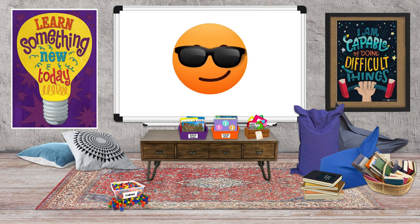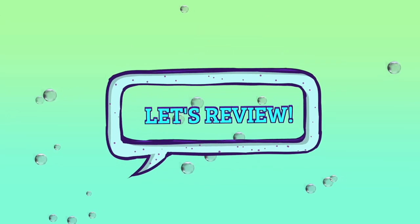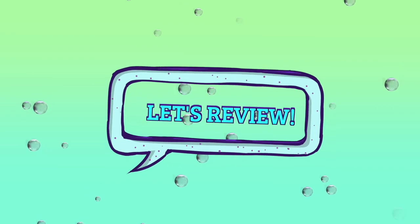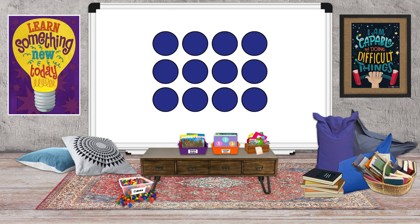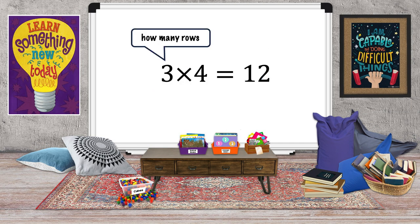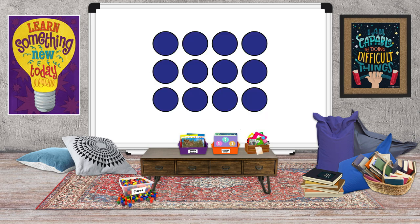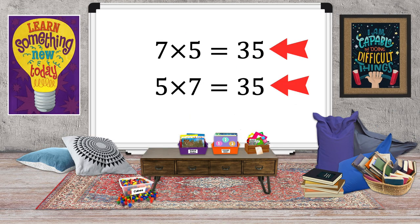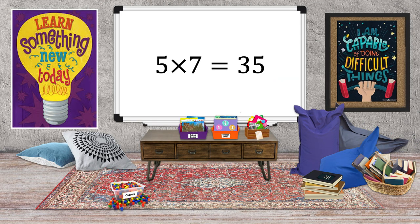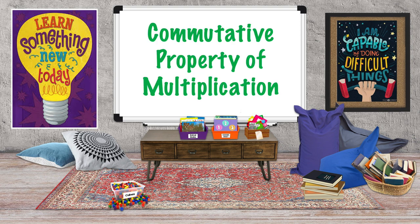Fantastic work! Let's review what we've learned today. A multiplication sentence is made up of factors and a product. Multiplication sentences can be seen as arrays. The first number tells us how many rows; the second number tells us how many columns. Using arrays as examples, we can see that when we switch the order of the factors, the product is still the same. Five times seven equals thirty-five, and seven times five equals thirty-five. This is called the commutative property of multiplication. Nice work, everyone!